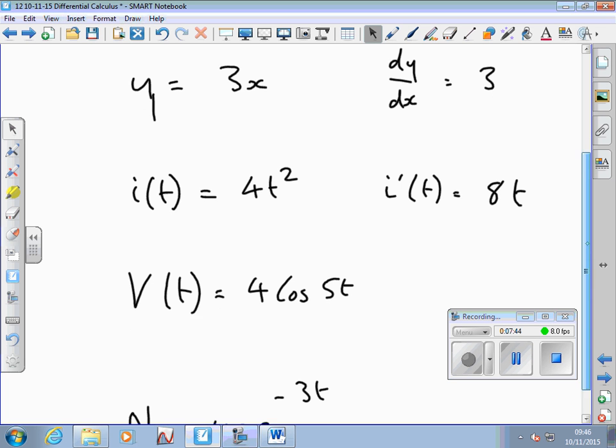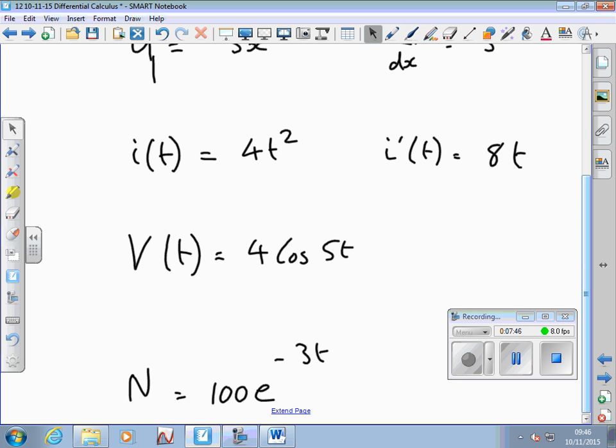Let's look at the next one. So what's the notation going to be? Well, again, we've got a V bracket t, so the notation is going to be V prime t. So this is voltage function against time. And it's a cosine function, cosine wave this time, 4 cos 5t. So if we look back, we're using this one, cos function.